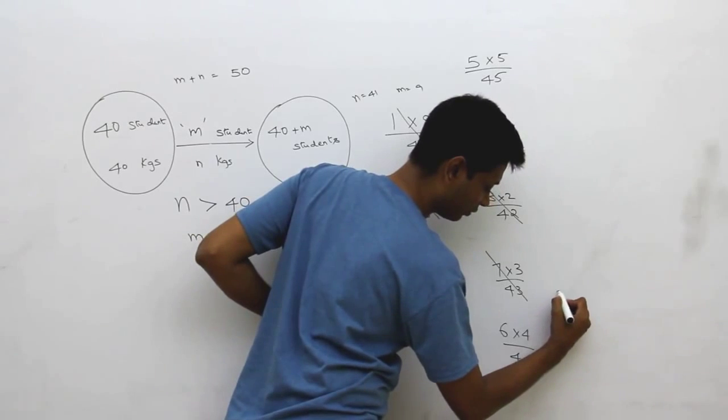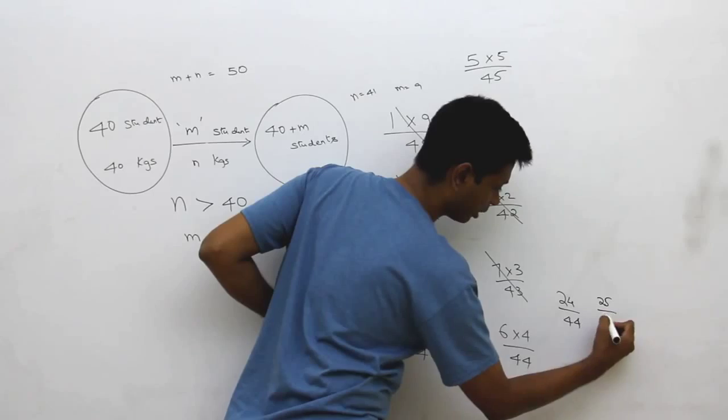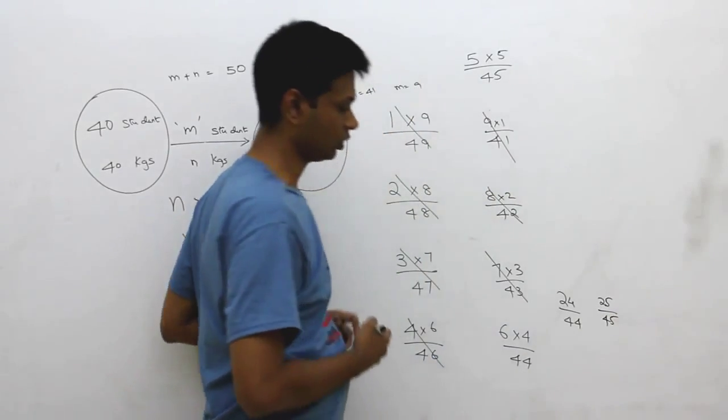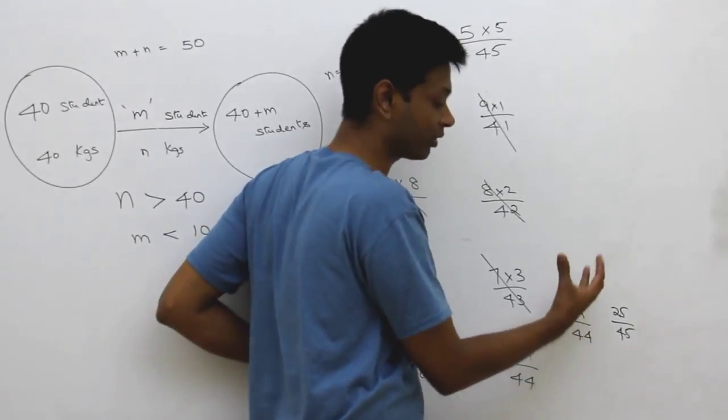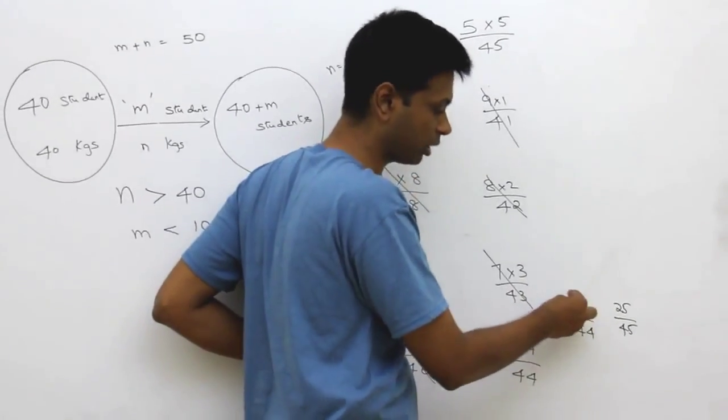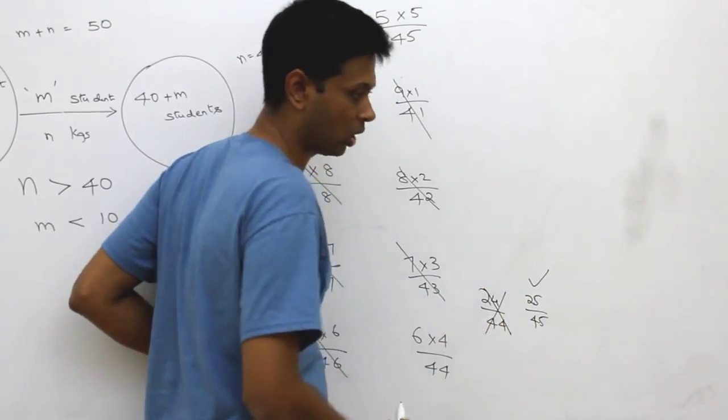So, we are comparing effectively 24 by 44 and 25 by 45. Here, the denominator is going up by 1. The numerator is going up by 1. But, the impact on the numerator is higher. Because, the smaller number is going up by 1. So, this is higher. This is also out.